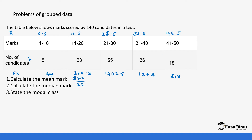The sum of f is 8 plus 23 plus 55 plus 36 plus 18, which gives us 140. The sum of fx is 44 plus 356.5 plus 1402.5 plus 1278 plus 819, which gives us 3900. So the mean is sum of fx over sum of f: 3900 divided by 140 gives us 27.85.